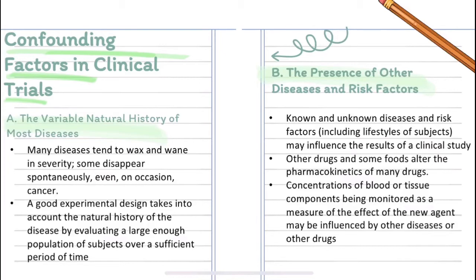The second confounding factor is the presence of other diseases and risk factors. Known and unknown diseases and risk factors may influence the results of a clinical study. Other drugs and some foods alter the pharmacokinetics of many drugs, and concentrations of blood or tissue components being monitored may be influenced by other diseases or other drugs.